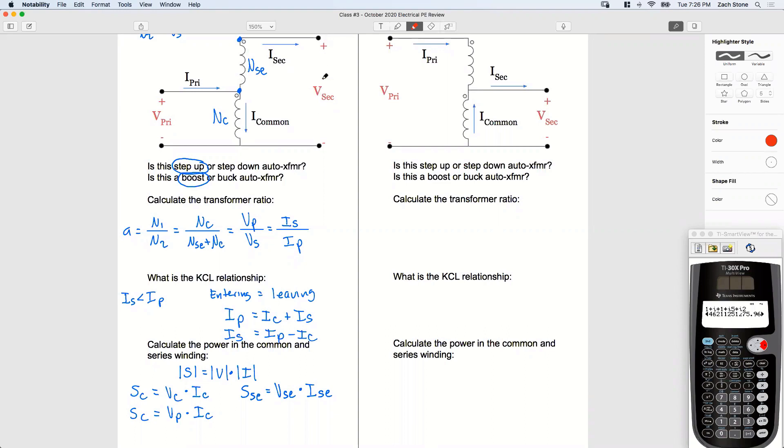It's going to, here's V secondary, here's V primary. This voltage has to be V secondary minus V primary. Look, plus Vse minus from here to here equals V secondary minus V primary. Everyone see that?